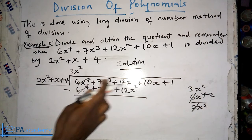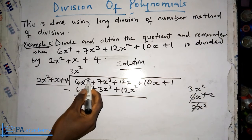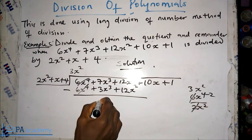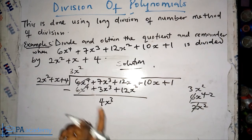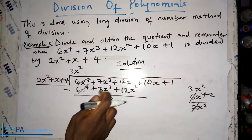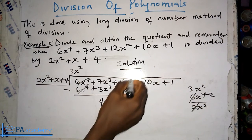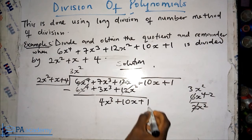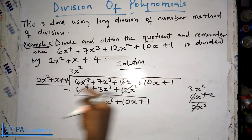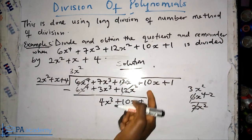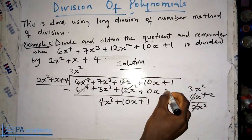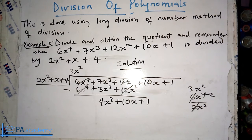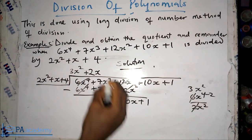Now subtracting: 6x⁴ minus 6x⁴ cancels to zero. 7x³ minus plus 3x³ gives 4x³. 12x² minus plus 12x² cancels to zero. We bring down the remaining terms: plus 10x plus 1. There's nothing to subtract those from yet, so we bring them straight down.